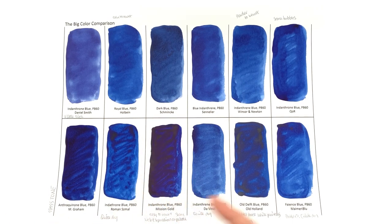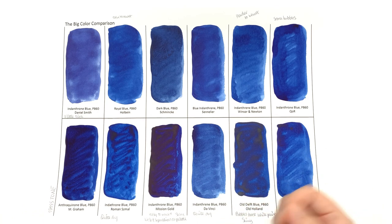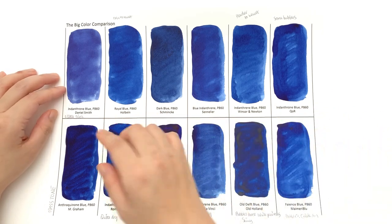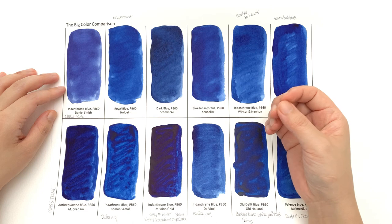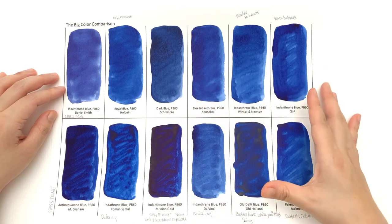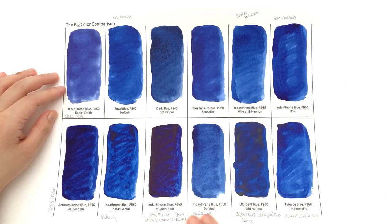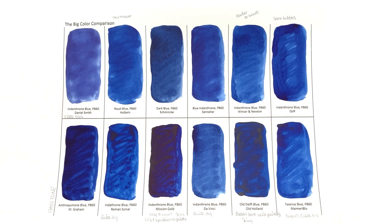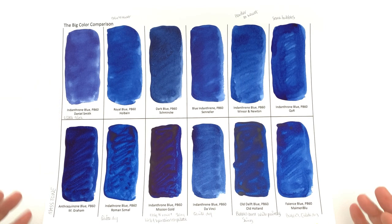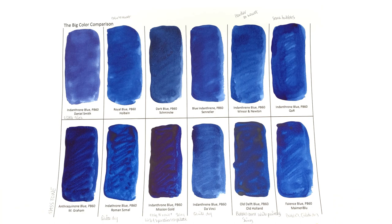I also commented on the texture of how the paint felt putting down, and Daniel Smith felt a little bit thick, not quite gummy, but it definitely felt thicker than the other colors. Roman Szmal, Da Vinci, and Mijello Blue suffer from feeling a little bit dry. It feels like when you're painting on mass tone that you need to water it down a little bit, which might not be ideal for you.